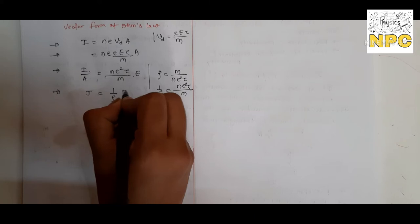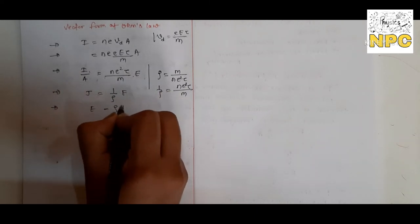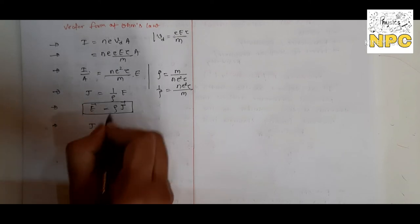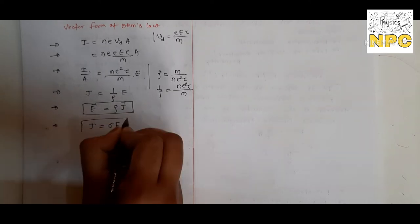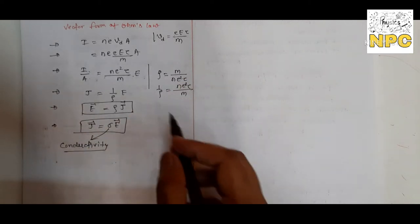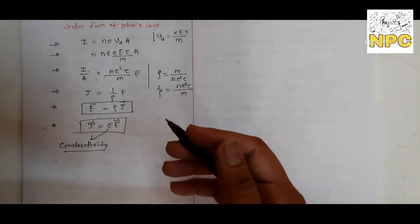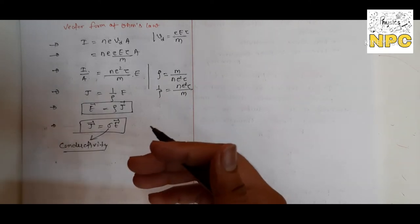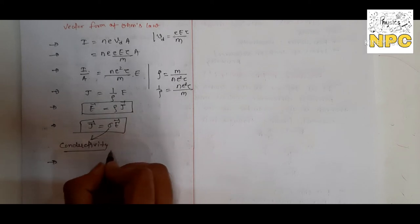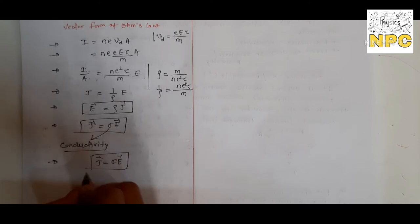So E equals rho times J — this is the vector form of Ohm's law. This equation can also be written as J equals sigma times E, where sigma equals 1 by rho is called the conductivity of the material. While resistivity resists the current in the conductor, conductivity allows current to flow by providing sufficient energy for electrons to move. So in vector form: J equals sigma E, and E equals rho J.